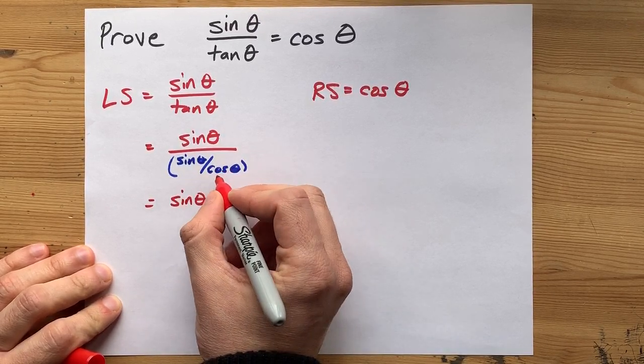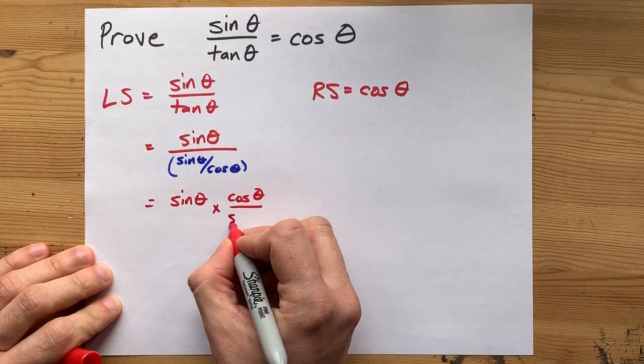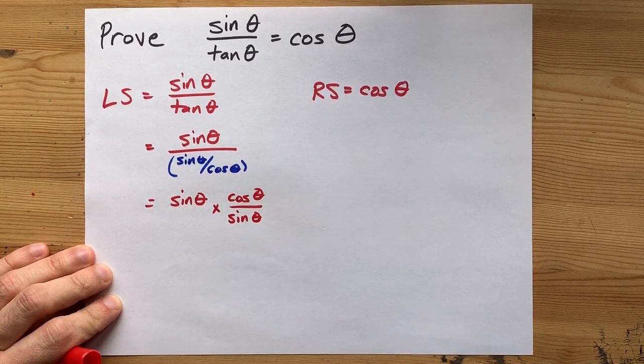That means I flip that fraction. Cos over sine is what it becomes, and it becomes multiplication as well.